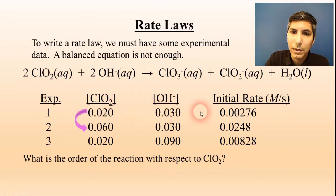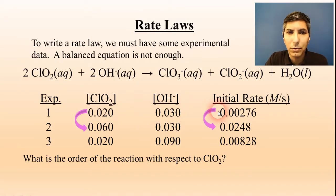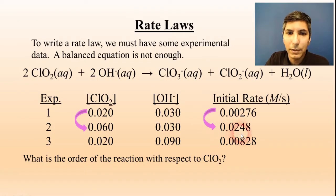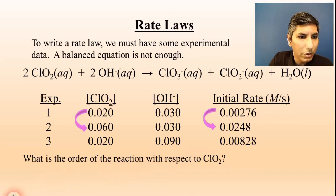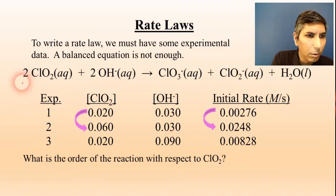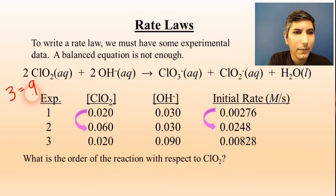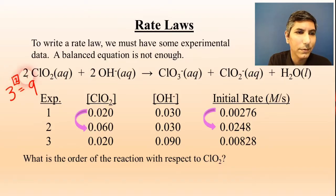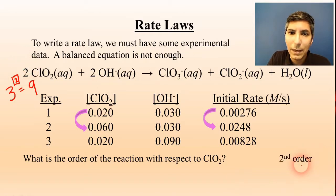Looking at the rate from experiment one to experiment two, I find that it went up by a factor of nine — this number is nine times larger than that one. So I can use this data to determine the order with respect to chlorine dioxide. If the chlorine dioxide concentration went up by a factor of three and the rate went up by a factor of nine, the power that makes that true is two. So the order of the reaction with respect to chlorine dioxide is second order.